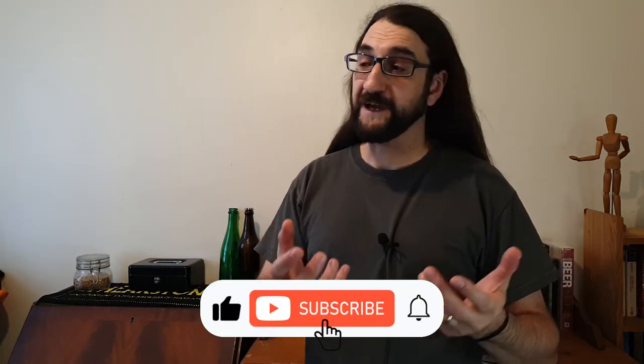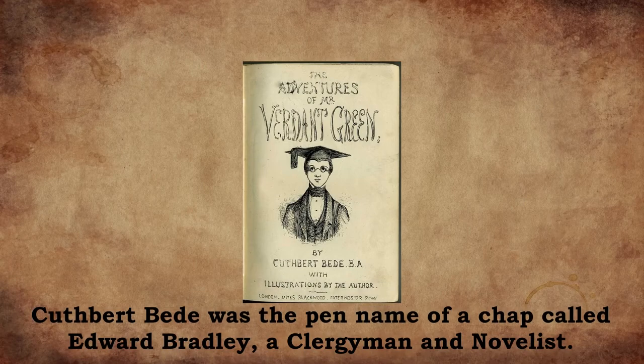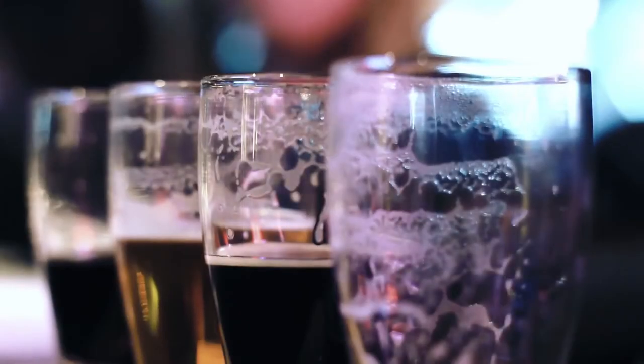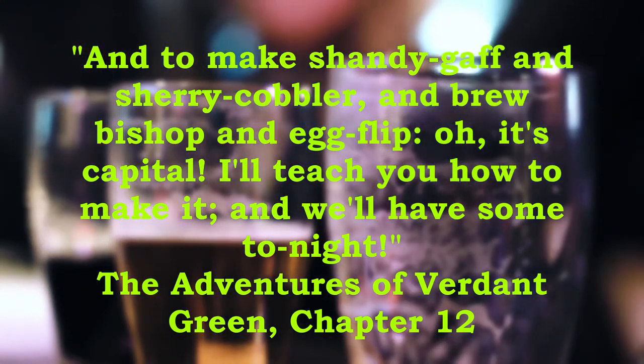Originally, I was going to start this series with the Shandy, which is a popular UK beer cocktail that we tend to drink in the summer months. But when I was doing my research, I noticed that the word Shandy was actually a contraction of the word Shandy Gaff, and I thought — what's a Shandy Gaff? So I did a bit of research. The word Shandy Gaff first appears in an 1853 novel by Cuthbert Bede called The Adventures of Verdant Green. In this novel, we don't really find out what this beer is, only that it's really good. So we're going to need to go a bit further afield to find out what this beer was.